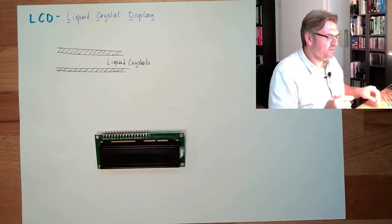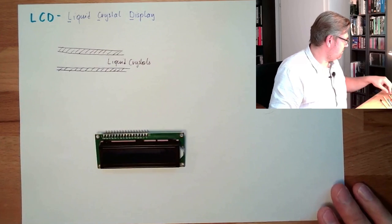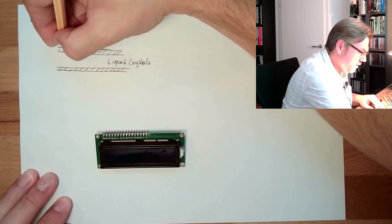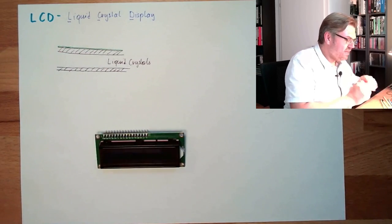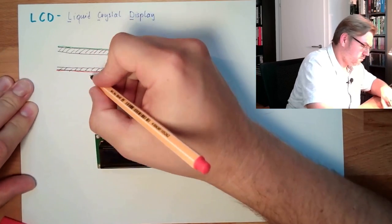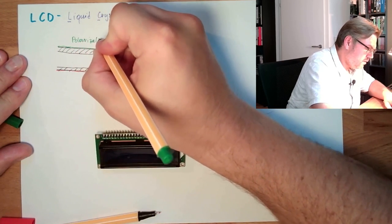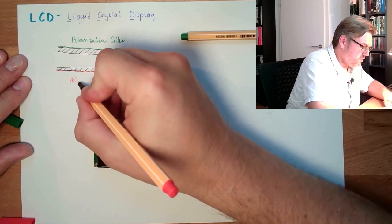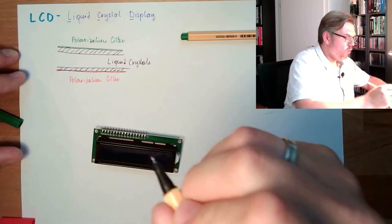Now, depending a little bit on the technology used, but basically it works like this. We have here a polarization filter covering the whole surface. And at the bottom, we have a second polarization filter.